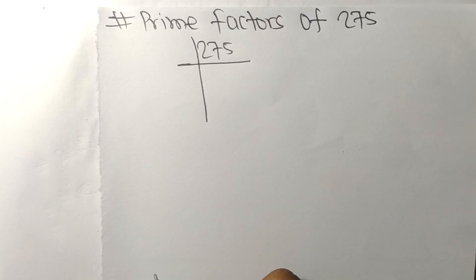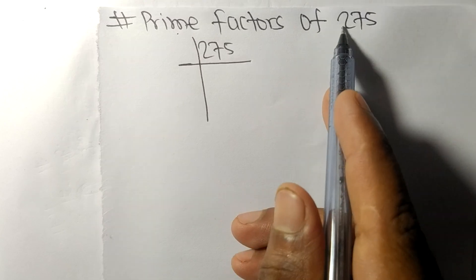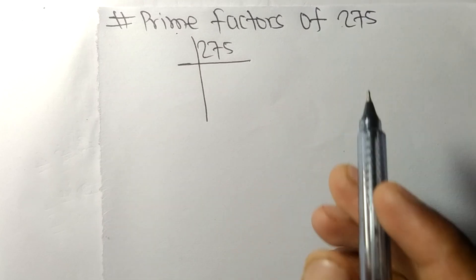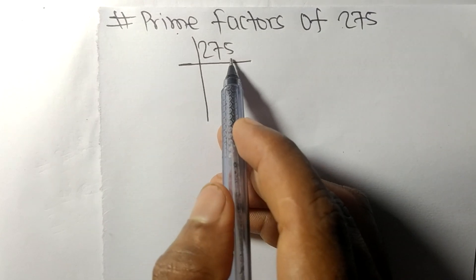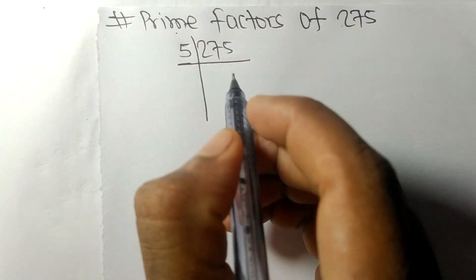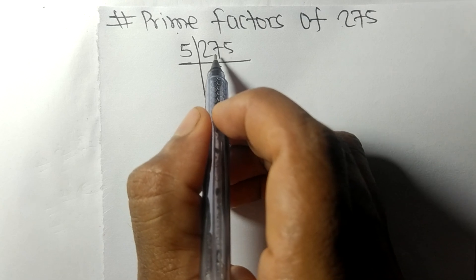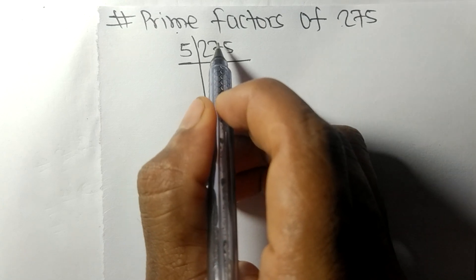Today in this video we shall learn to find the prime factors of 275. It contains 5 at the end, so this whole number is divisible by 5. 5 times 5 means 25, remainder 2, giving us 25.